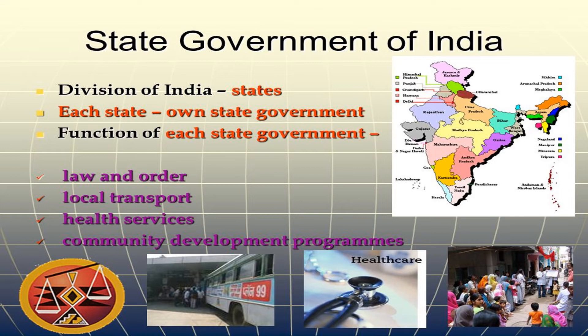The people of the particular state select their government for the next five years. For example, in 2021 the people of West Bengal selected their state government, and our Chief Minister is the respected Mamata Banerjee. The state government maintains law and order, local transportation systems, health services, community development programs, and many other things.